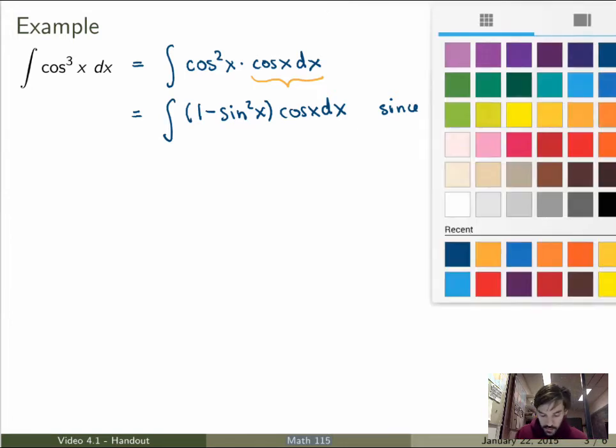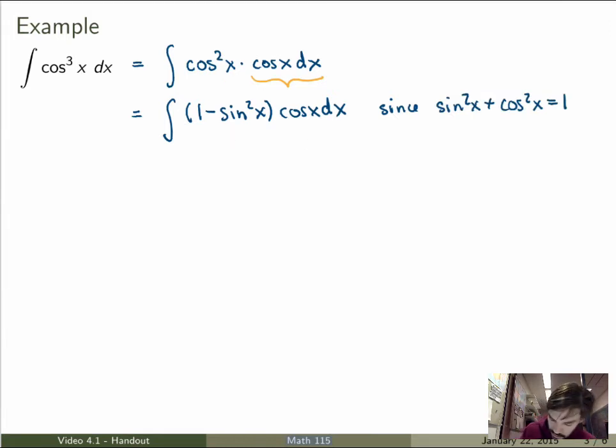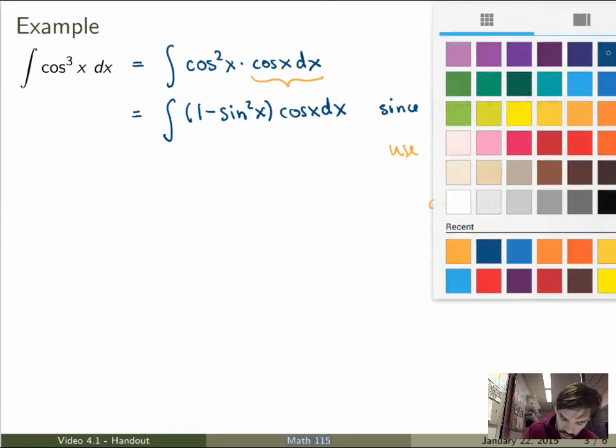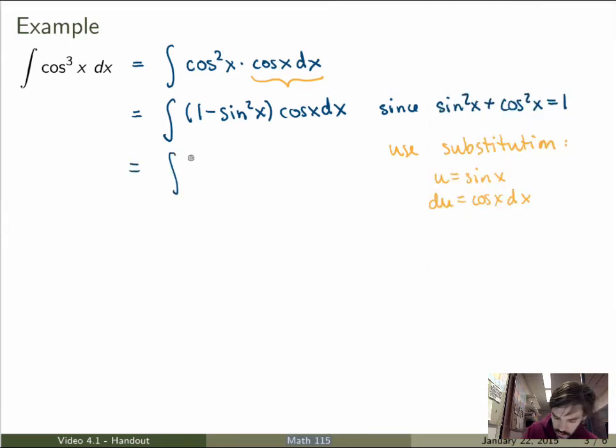And once I've done that, then this is nice because then I can use substitution directly. So I'm going to use the substitution u equals sine of x and du equals cos of x dx because I factor out a cos of x dx here. So under that substitution, the integral becomes simply the integral of 1 minus u² times du, which I can integrate. I get u minus u³/3 plus a constant.